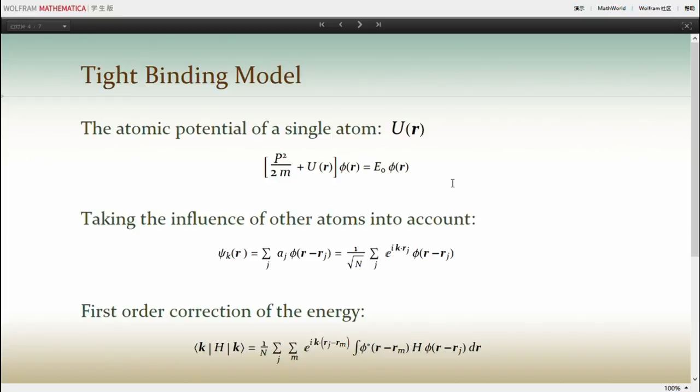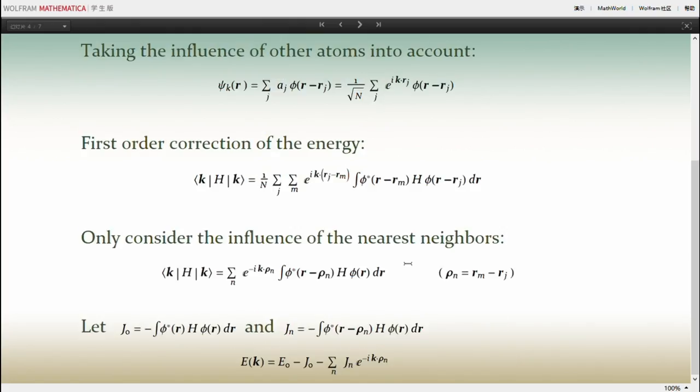For a system of N atoms, the degeneracy of each energy level is N. From the perturbation theory, the wave function for a degenerate system can be written as a linear combination of degenerate states. And if Aj in the expression is equal to the expression on the right, the function satisfies the Bloch theorem. We can also write the first order correction of the energy.